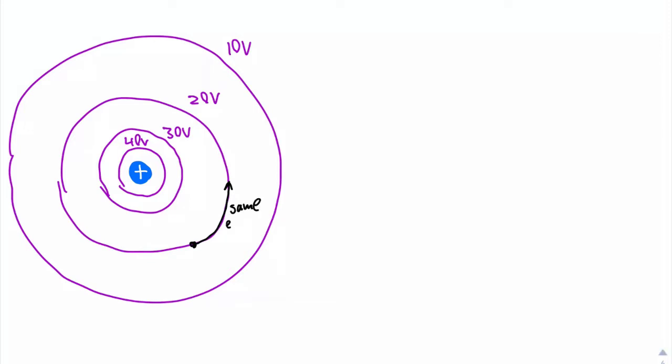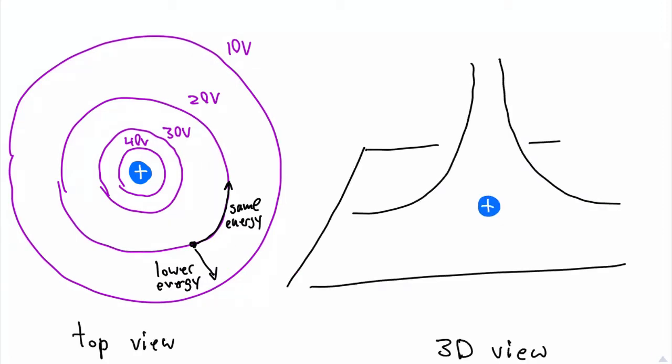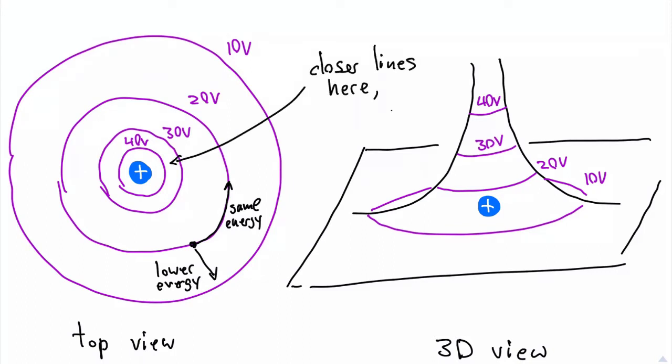If I place a charge on an equipotential, then that charge has the same amount of energy everywhere along that line. We can imagine the equipotentials making a 3D surface. The higher the voltage, the higher the surface goes. Notice that when the equipotentials are close together, closer to the charge, the slope of the surface is steeper.